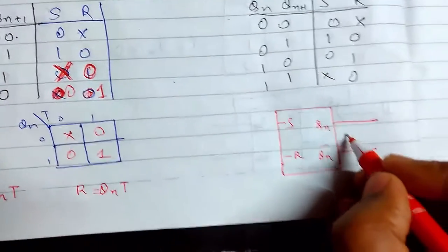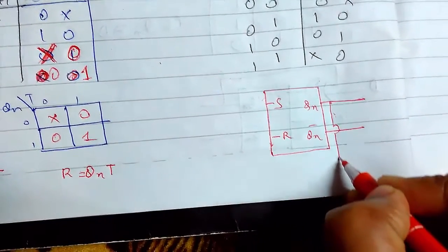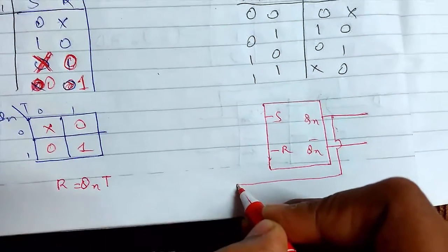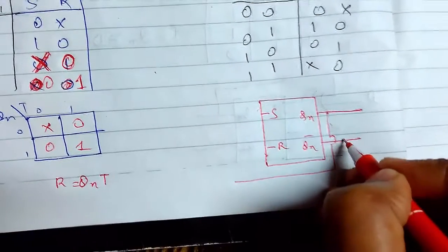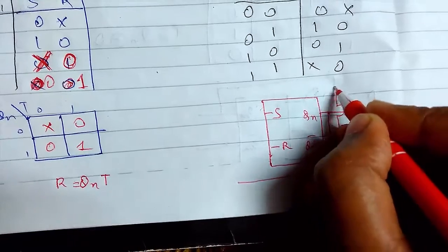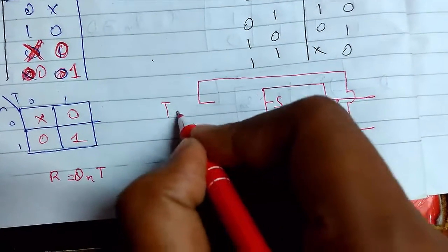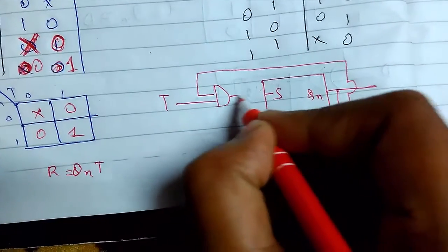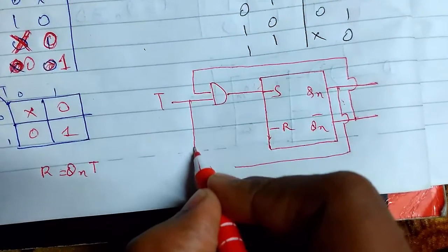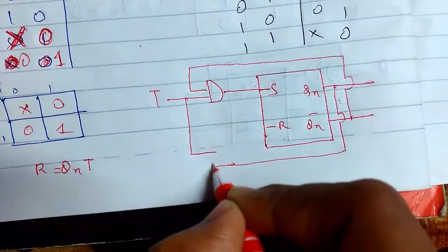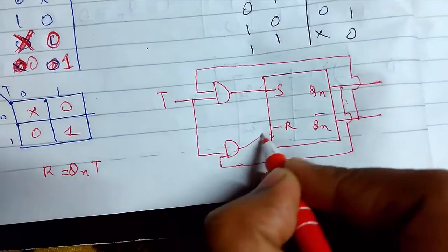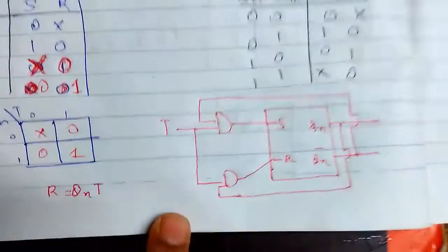This right here will be used by, first of all I use this in the AND operation. This is the T, and this will be something like this. This is how the circuit will look like.